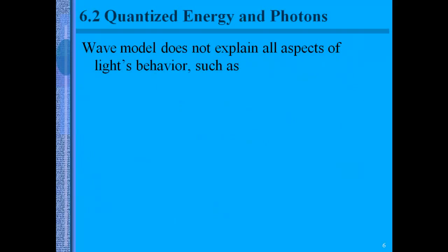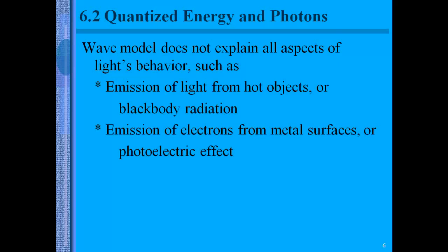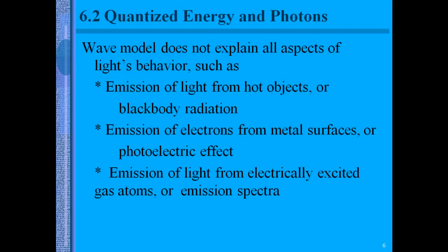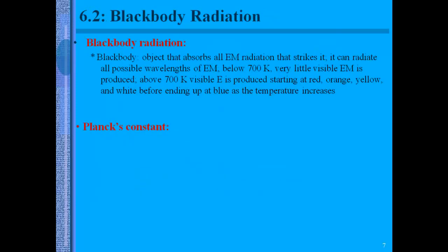Now the wave model will not explain all aspects of light's behavior. So things like black body radiation, the photoelectric effect, or the emission spectra will not be explained by a wave model. Black body radiation involves objects absorbing all electromagnetic radiation that strike it. But they will only produce certain visible light at certain temperatures. So below 700 Kelvin, you'll see very little visible electromagnetic radiation.